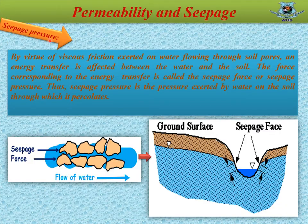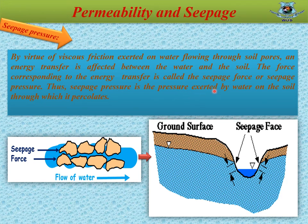Seepage pressure: by virtue of viscous friction exerted on water flowing through soil pores, an energy transfer is affected between the water and the soil. The force corresponding to the energy transfer is called seepage force or seepage pressure. Thus, seepage pressure is the pressure exerted by water on the soil through which it percolates. So, we can say seepage pressure is the force or pressure of water into the soil.